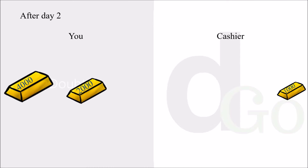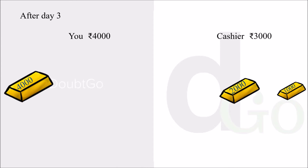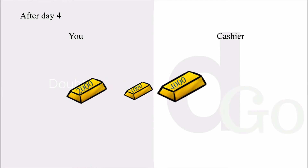After day two, you give the two thousand gold bar to the cashier and take back the one thousand. Now you have rupees three thousand and the cashier has rupees two thousand. After day four, you give the four thousand gold bar and take back the two thousand and one thousand gold bars.